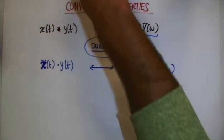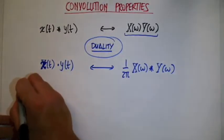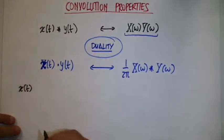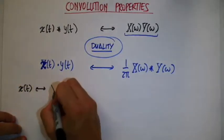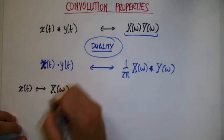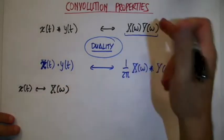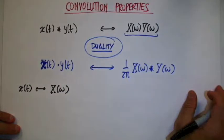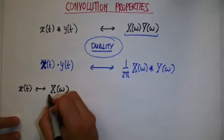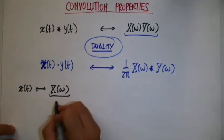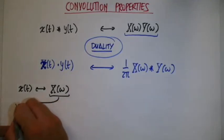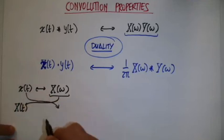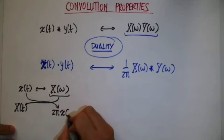We already saw that if I have a pair, x of t which corresponds to x of omega. If you look at the video in which I discuss this duality property, you take x of omega, you make it a function of time, and then the correspondent Fourier transform is going to be 2π capital X of minus omega. So this is due to duality.